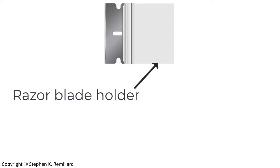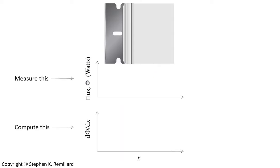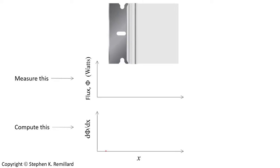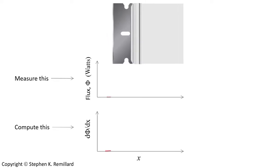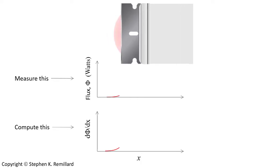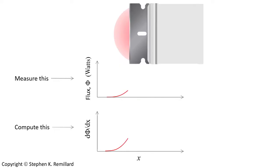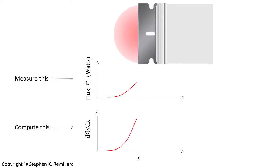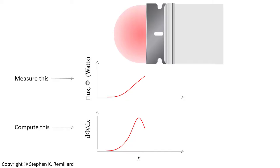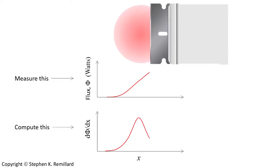I'll describe a measurement where a razor blade is used to measure the diameter of a laser beam. Here I have a razor blade and its gray holder blocking the beam from reaching a photo detector. I'll graph the output of a photocell as this razor blade is dragged across the beam. Flux is a radiometric term for power — it's literally the watts detected. The bottom graph shows the position derivative of that power, dΦ/dx.